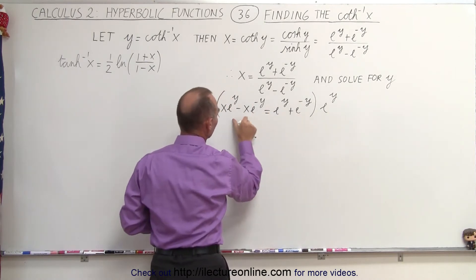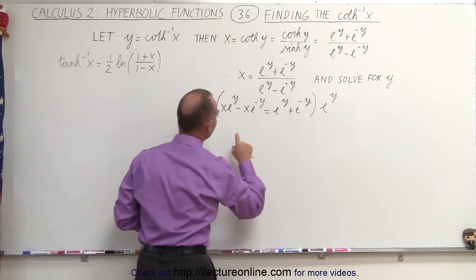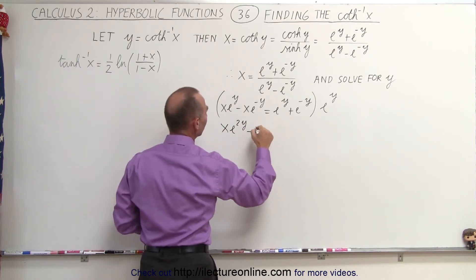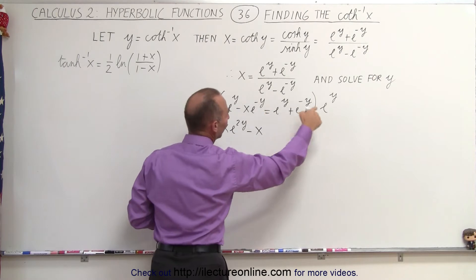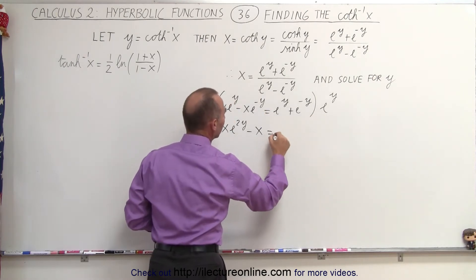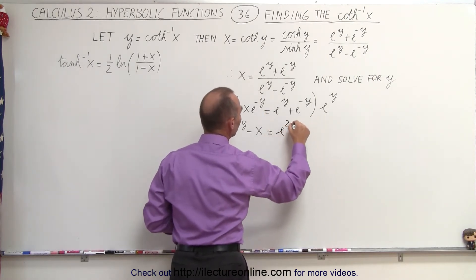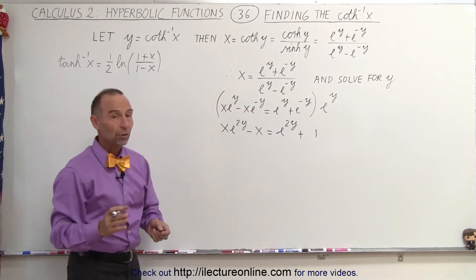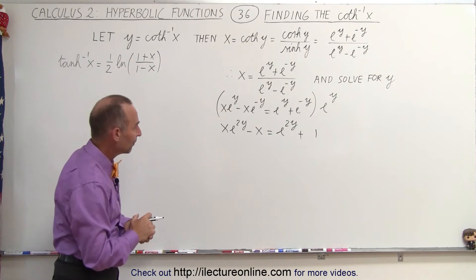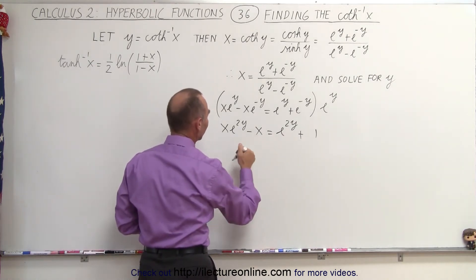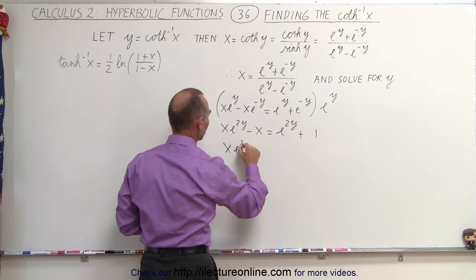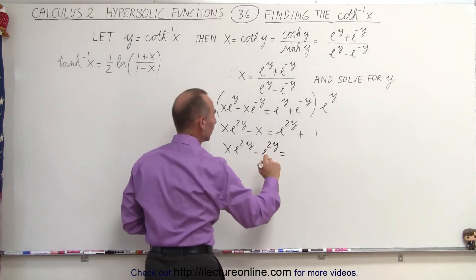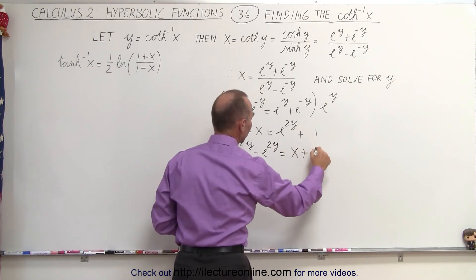So this essentially is multiplying both sides of the equation by the same thing. So here we end up with x e to the 2y minus x — that would be e to the minus y times e to the y, which is 1 — equals e to the 2y, and then multiplying those together we get 1. Now what we want to do is isolate all the terms that have an e to the 2y, so we move this to the left side: x e to the 2y minus e to the 2y, and that equals, moving everything else to the other side, x plus 1.